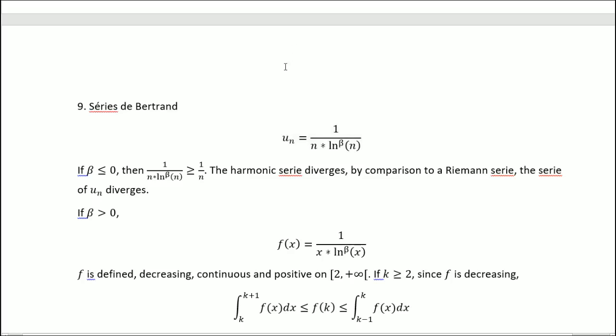If beta is negative or zero, then we have this inequality here. That is fairly logical due to the properties of the natural logarithm. So this harmonic series diverges by comparison to a Riemann series, so the series of 1 over n. So the series of u_n diverges.